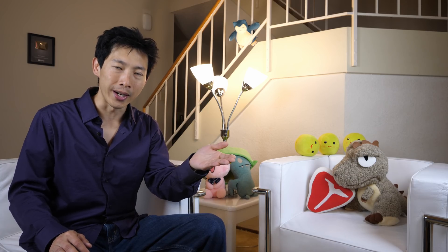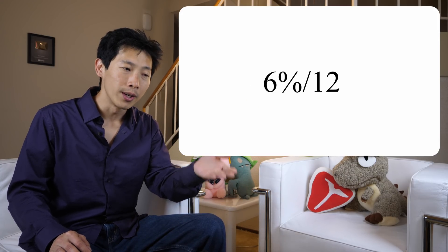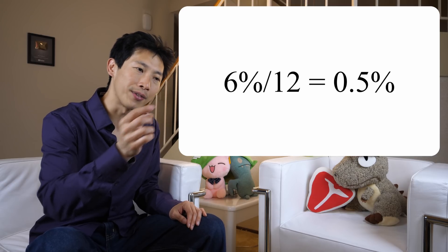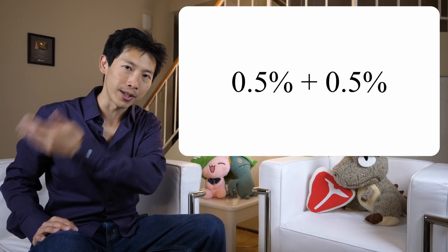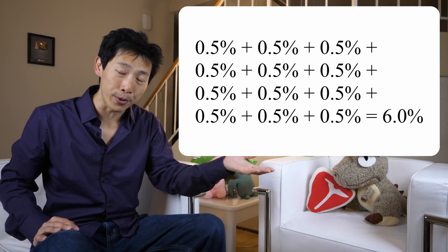Forget about the math where they say compound it every single day or compound it continuously. Compounding continuously is not going to be very different from compounding every single day, and there might be a slight difference compared to compounding it every month. So how do you exactly do this? You take the interest rate, 6% divided by 12 — which is 12 months of the year — and you realize 6% divided by 12 is only 0.5%. If you do this every single month, 0.5% each time, of course it adds up to 6% altogether. But you want to charge interest on that loan amount in addition to the amount already added to it.